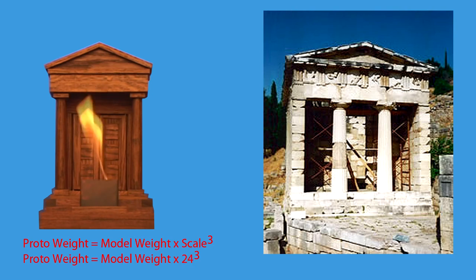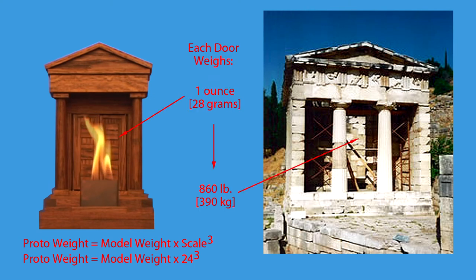For example, assuming the same materials, weight scales as the cube of the scale factor, and each of the two 1-ounce model doors would scale to a full-scale weight of about 860 pounds for each door, approaching a ton for the two doors.